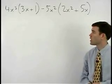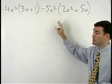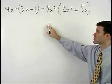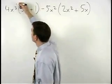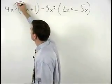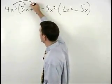Start this problem by distributing the monomials through the binomials inside each set of parentheses. So distributing 4x³ through 3x+1, think of 3x as 3x to the first.